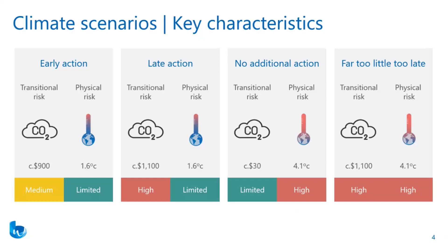Under the early action scenario, this assumes there is an early move towards introducing a carbon tax of roughly $900 per ton of emissions, and that this helps to limit emissions so that net zero is achieved by 2050, limiting the impact of warming by the end of the century to 1.6 degrees. By way of context, the general scientific consensus is that warming has to be limited to below two degrees above pre-industrial levels — or preferably below 1.5 degrees — to limit the worst impacts of climate change, which is achieved by reaching net zero by 2050.